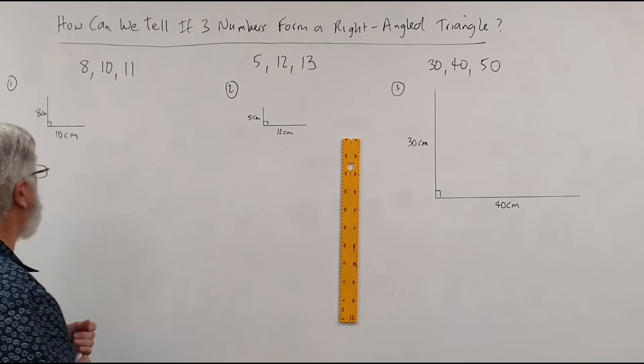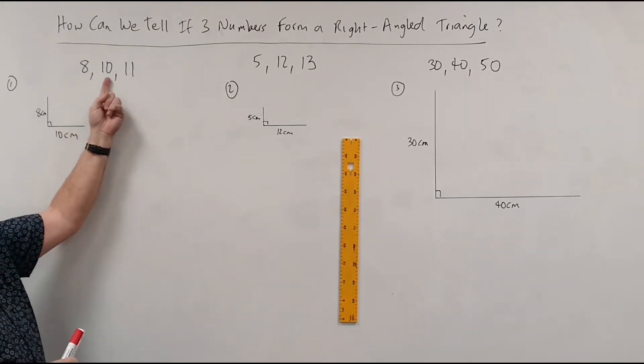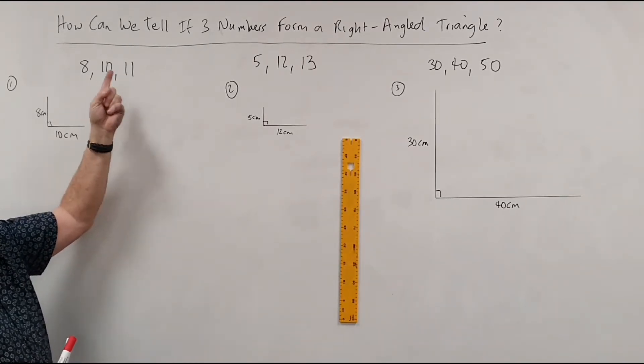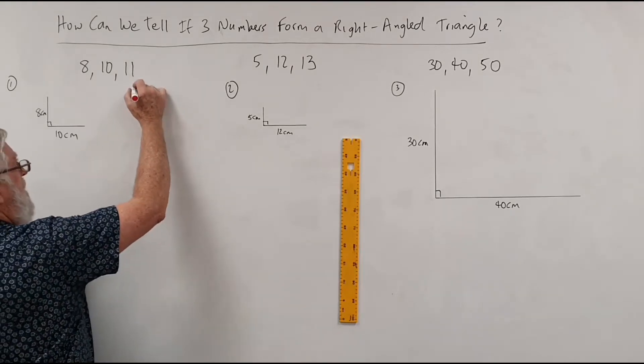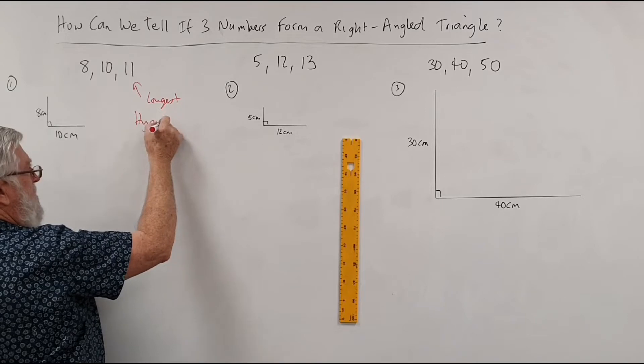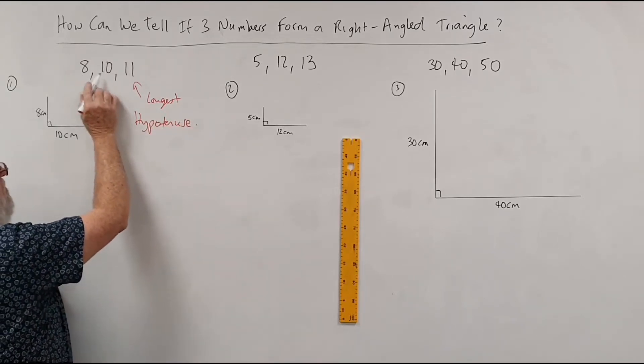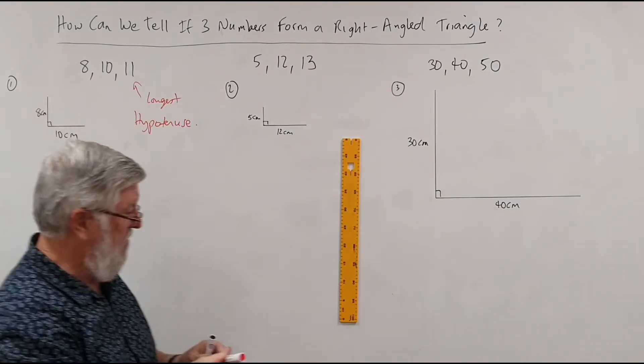So think about this idea here. If I said to you I had a triangle that was 8cm for one side, 10cm for another side and 11cm for the other side, that's the longest one. So we always talk about the longest one and the longness is called the hypotenuse. So the hypotenuse joins the ends of those two lines.